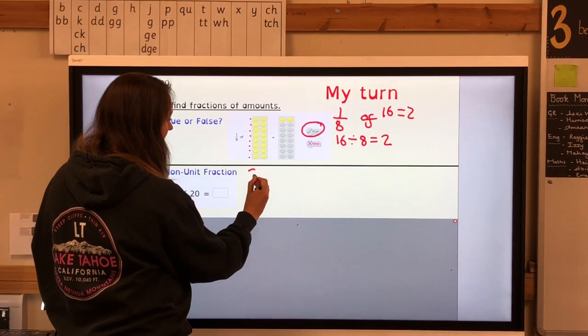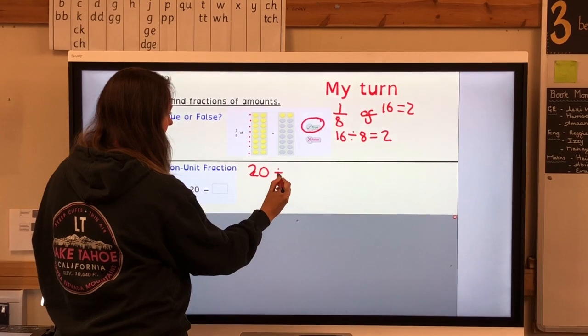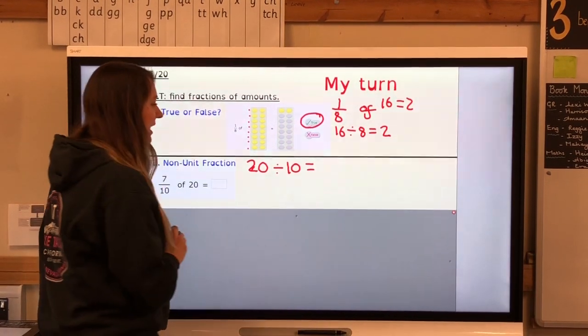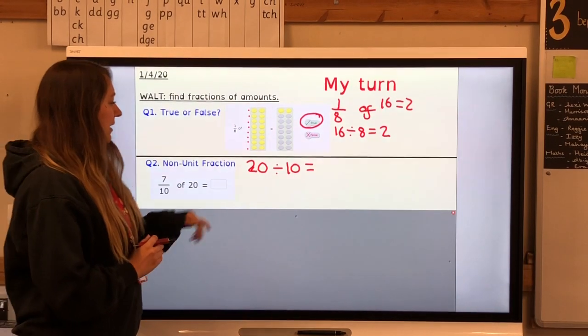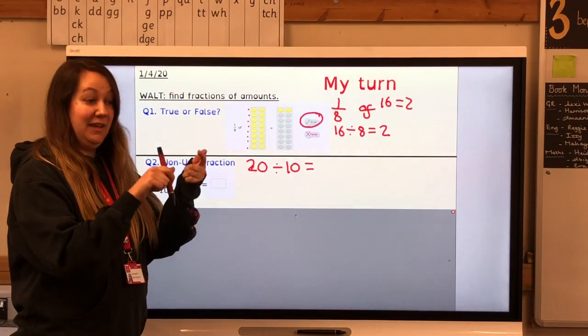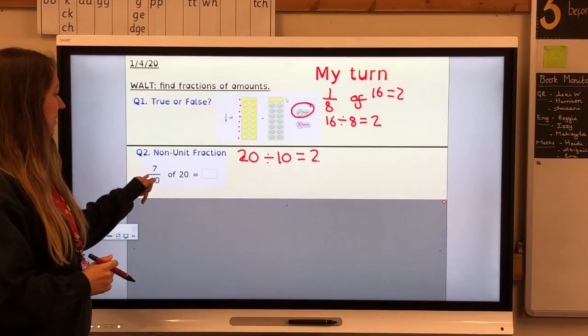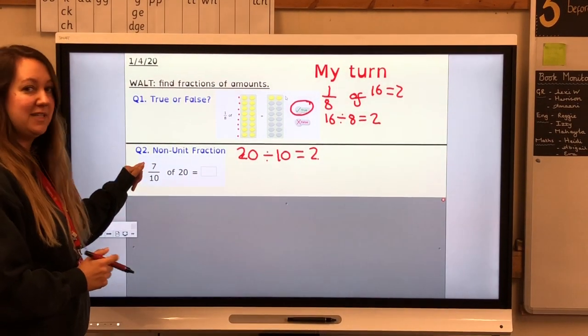My calculation will be 20, the whole, divided by the denominator, the 10 equal parts. My 10 times table, 10, 20, 2. However, that only tells me one-tenth. I want seven-tenths. So I'm going to take my answer and times it by the numerator.